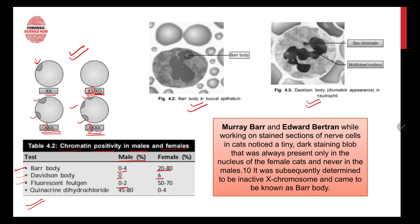For fluorescent feulgen staining, there is a 0–2% possibility in males and 50–70% in females. For quinacrine dihydrochloride, 45–80% of males show a positive test, whereas only 0–4% of females show a positive test. These are chemical reagents used to stain chromosomes, and positive or negative results help determine sex.